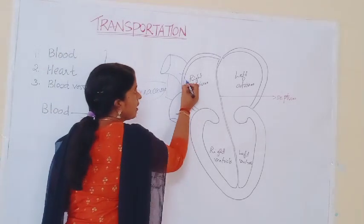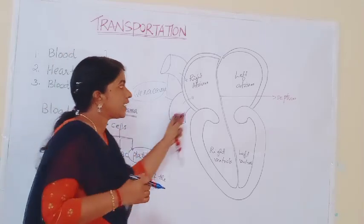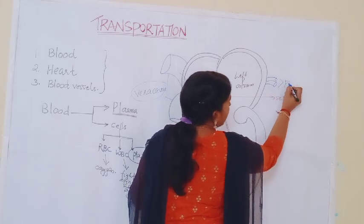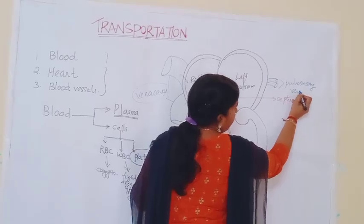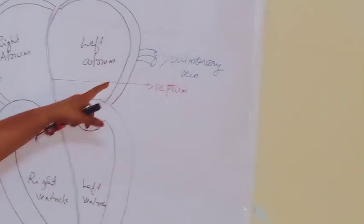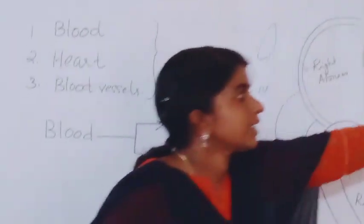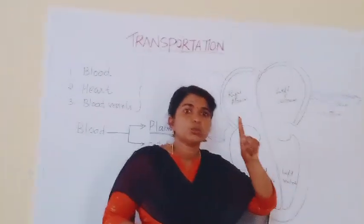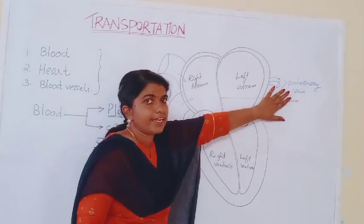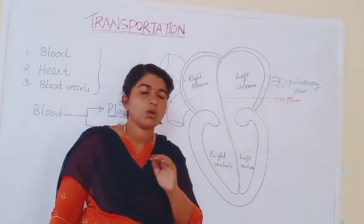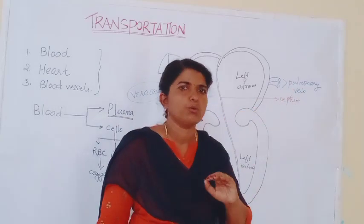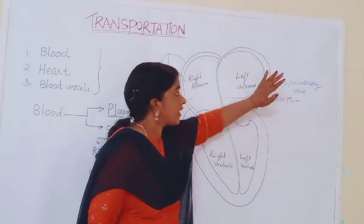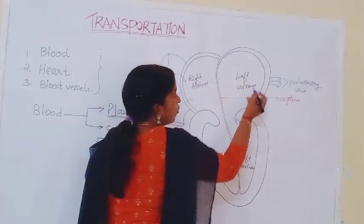At the same time, here you can also see a blood vessel known as the pulmonary vein. The word pulmonary is related to lungs. This pulmonary vein collects blood from the lungs, and it is oxygenated blood, because the lungs are the storehouse of oxygen. So oxygenated blood reaches the left atrium through the pulmonary veins.